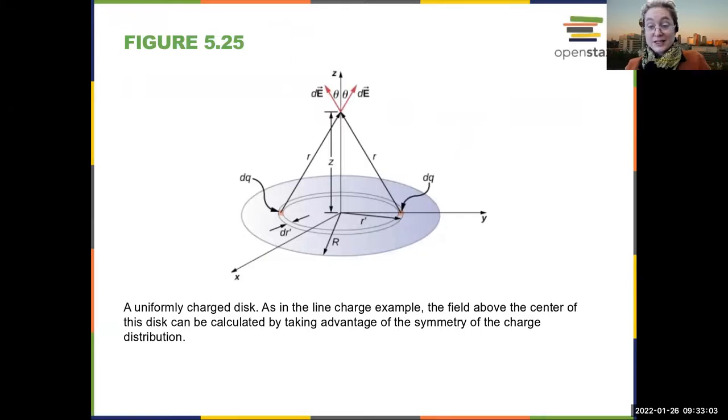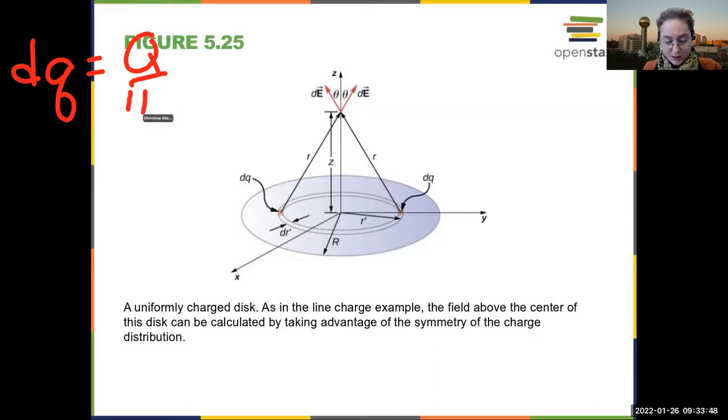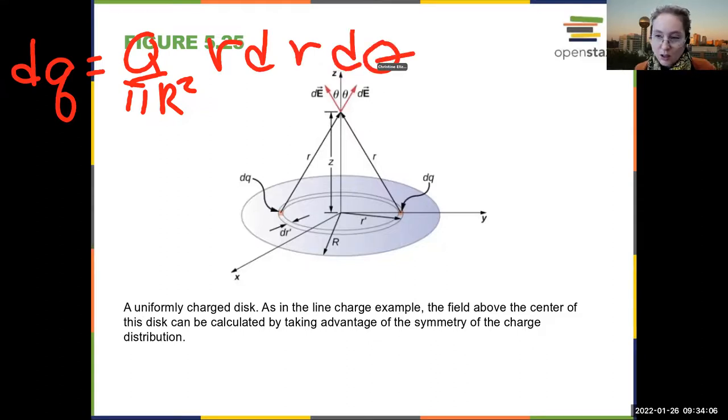If you want to do an annular disk, you have two ways of setting it up. And I'm not going to walk through the math. You can either do what we've been doing so far, and now your small amount of Q, dQ, is equal to the total charge Q divided by pi R squared, and then times the area of a small segment, which is going to be r dr d theta. And then you would integrate over all r and all theta.